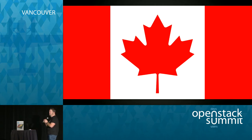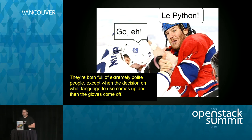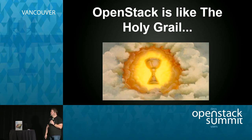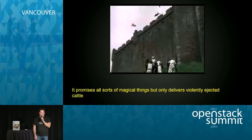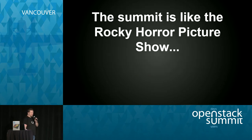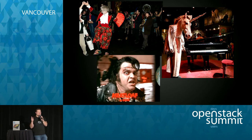Why is OpenStack like Canada? Because it's awesome — and because it's full of extremely polite people, except when the decision on what language to use comes up, and then the gloves come off. Why is OpenStack like the Holy Grail? Because it promises all sorts of magical things, but it only delivers violently ejected cattle. And why is this summit like the Rocky Horror Picture Show? Because it started out as a couple of lost kids in the woods, but I think they're going to try and serve us meatloaf at the HP party. That's all I have. Thank you, and try the fish.